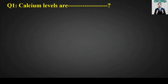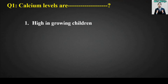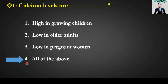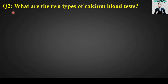MCQ number one: Calcium levels are blank. Options are: high in growing children, low in older adults, low in pregnant women, or all of the above. The right answer is option number four, all of the above. Calcium levels are high in growing children, low in older adults, and low in pregnant women.